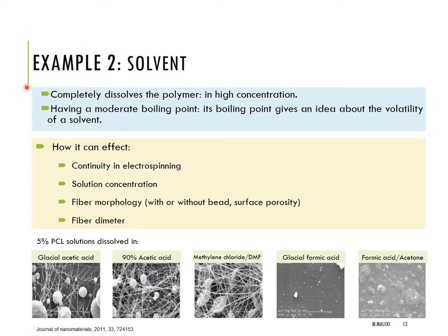Another important factor is choosing the right solvent. The right solvent should completely dissolve the polymer at high concentration and should have a moderate boiling point. The solvent can affect electrospinning in different ways — for example, it influences the continuity of electrospinning, the solution concentration, the fiber morphology, and the fiber diameter. You can see here different fiber morphologies when PCL polymer is dissolved in different solvent systems.